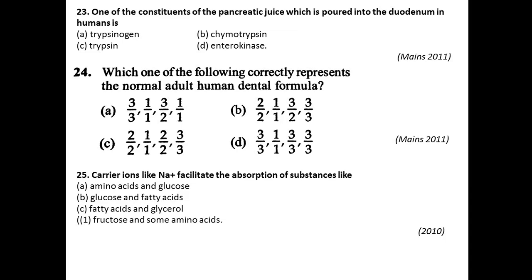Question twenty-five: Carrier ions like sodium facilitate the absorption of substances like — amino acids and glucose, glucose and fatty acids, fatty acids and glycerols, or fructose and amino acids? Amino acids and glucose are transported through sodium facilitation. So option A is the right answer for this question.